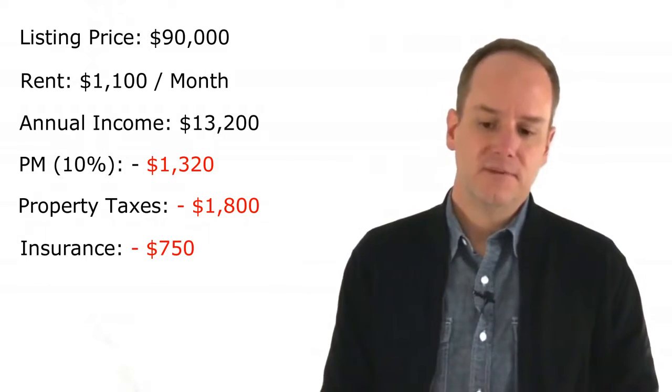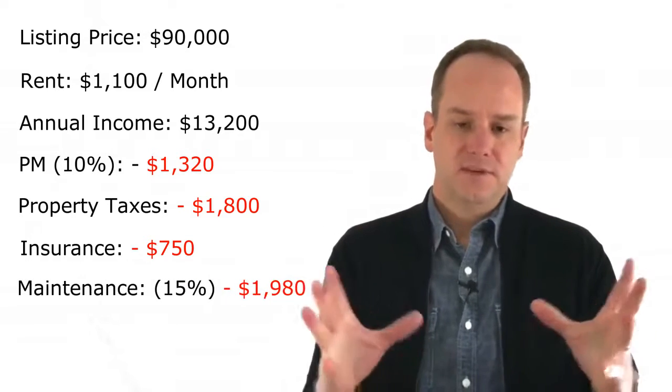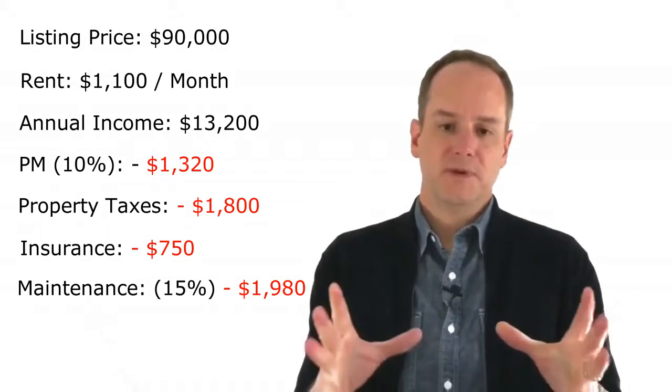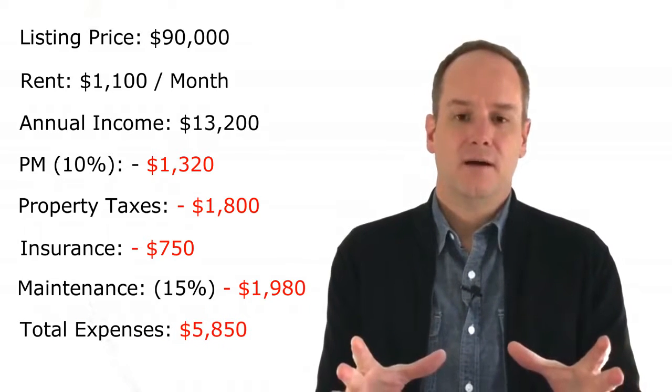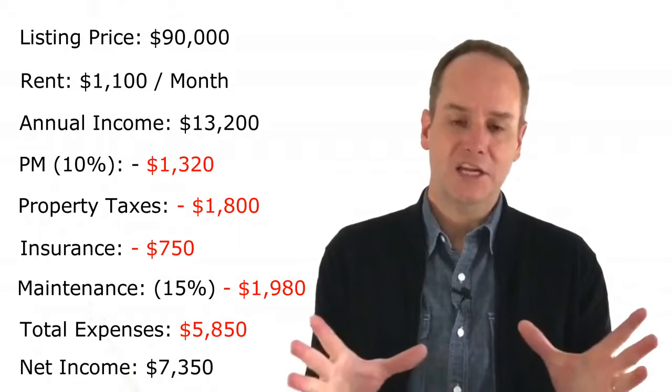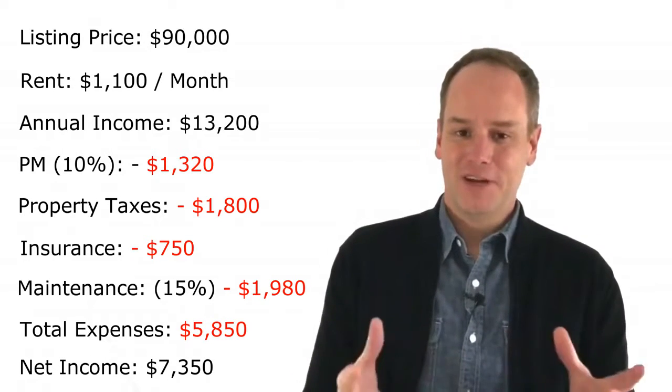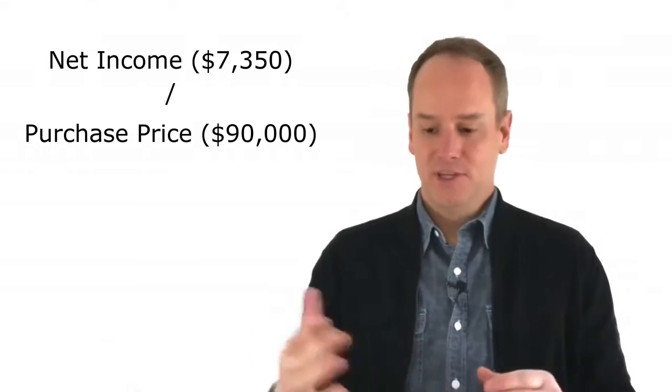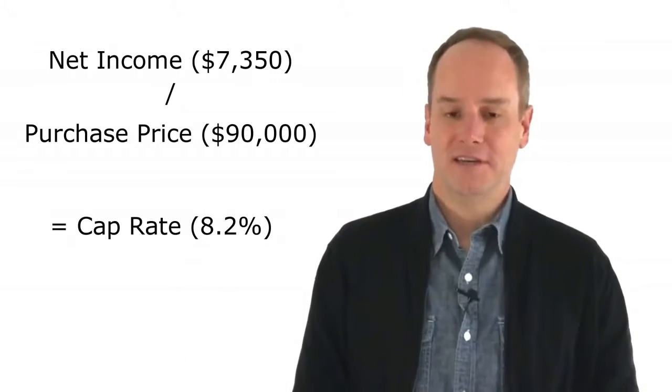Insurance, let's say $750. We'll say maintenance is 15%, that'd be $1,980. So your total expenses for this property could be $5,850, which leaves you a net income of $7,350. So simply take that divided by the purchase price. And in this particular example, it comes to an 8.2% cap rate.